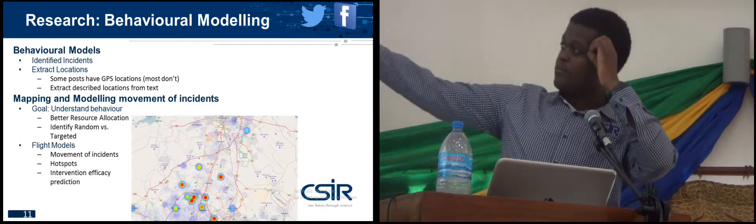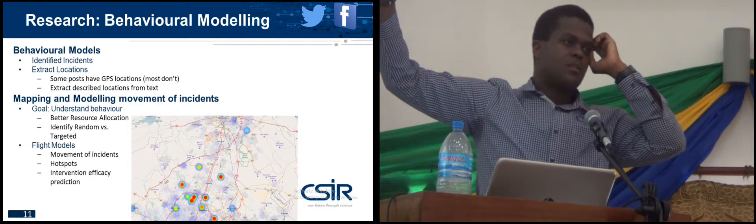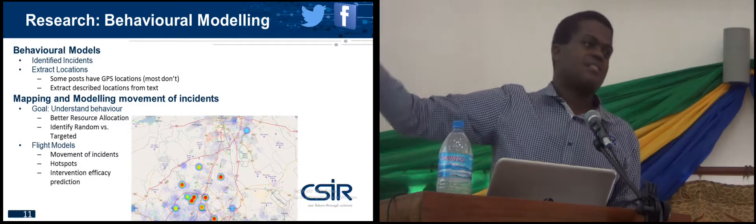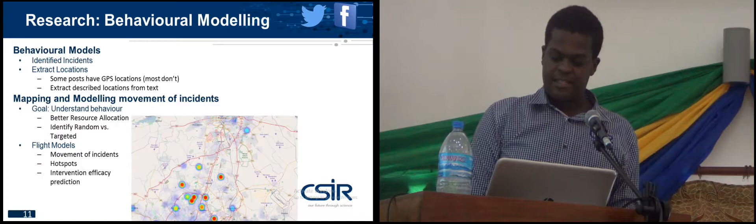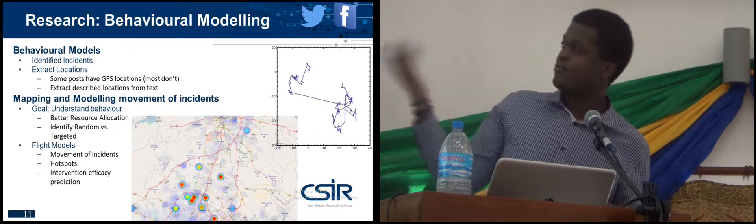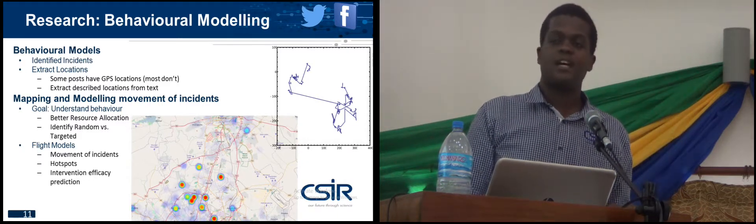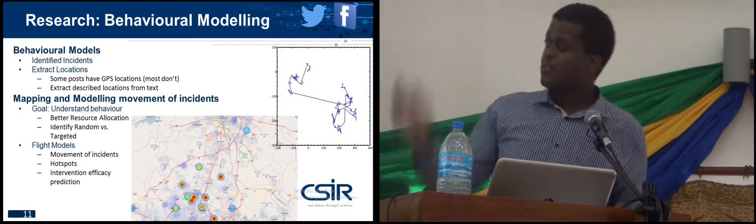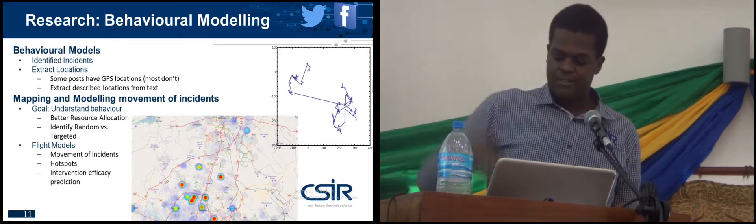What we're hoping to do is extract locations either from post geotags or by reading the text and extracting locations as described, then figuring out where this is. From there we can do things like heat maps, and one of the things we wanted to do is look at behavior — how things move around. Can you figure out if it's a one-off thing or if it might be a pattern?